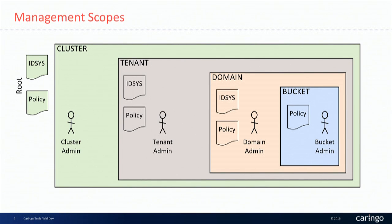Heading down the hierarchy, you get into the storage domains. This is where content actually goes — when you put content into Swarm, it's going into a storage domain. We easily let you have hundreds or thousands of storage domains within the system; there's really no limit, with very tiny impact in terms of provisioning. And getting all the way down to the lower levels are buckets within the system, which you're familiar with from the Amazon-style protocol and layout.